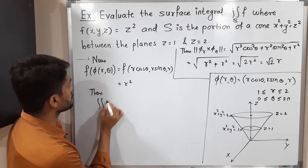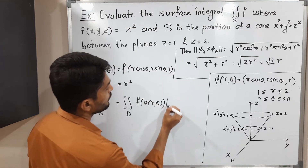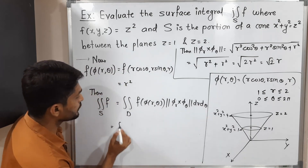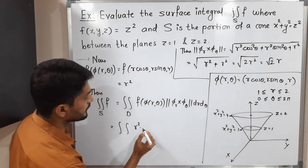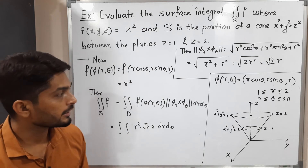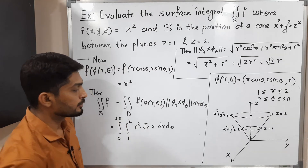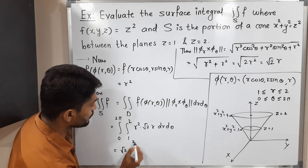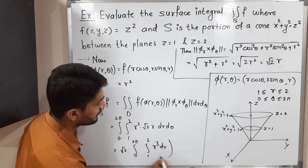The double integration of F over S equals the double integration over D of F of phi(R, theta) times the norm of phi_R cross phi_theta, dR dtheta. Putting the values: F of phi(R, theta) is R squared, the norm is root 2 R, and the limits are R from 1 to 2 and theta from 0 to 2 pi. Root 2 is a constant and comes outside the integration, giving root 2 times the integral from 0 to 2 pi and 1 to 2 of R squared times R, which is R cubed, dR dtheta.